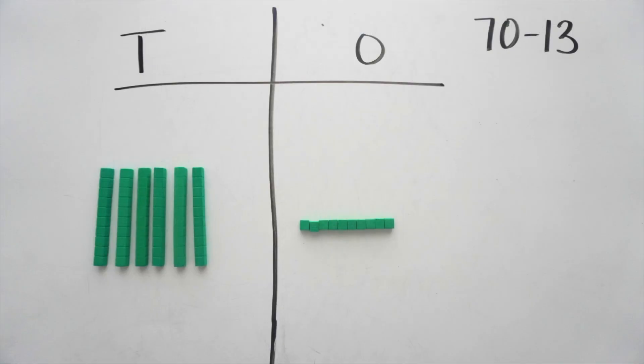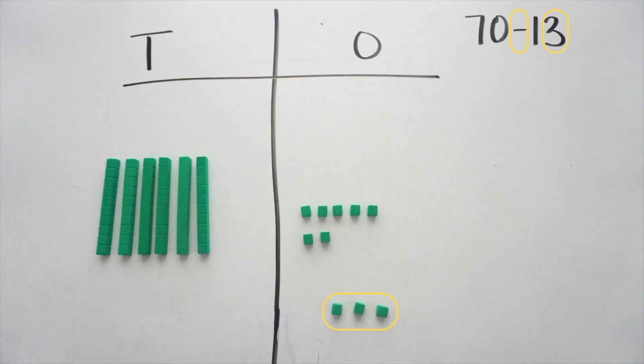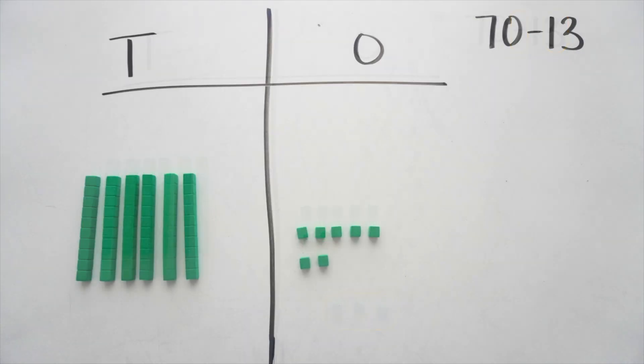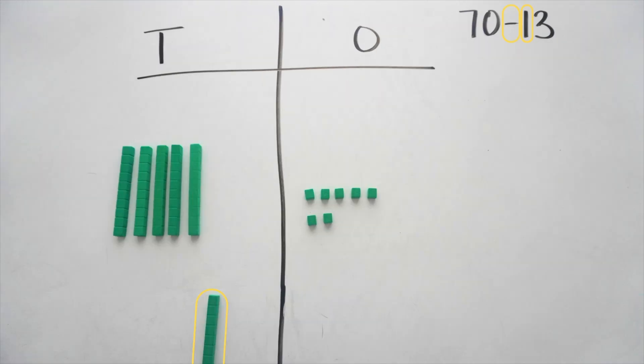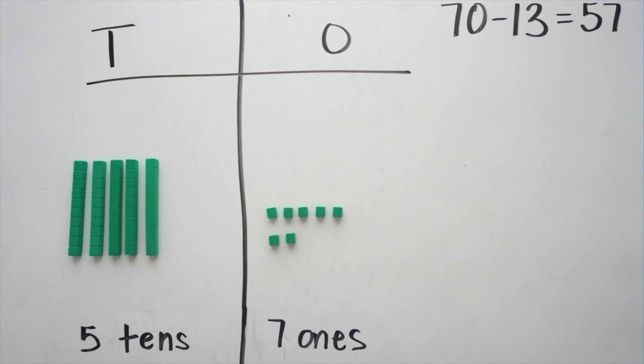With addition, we showed joining two numbers together, but with subtraction, we can show taking from one number using the blocks. And if regrouping is necessary, students can trade one flat for 10 rods or one rod for 10 units to make the subtraction work.